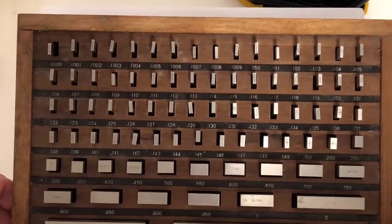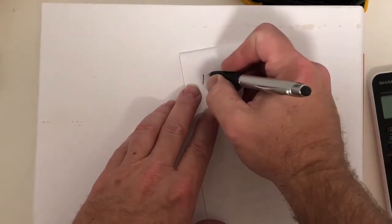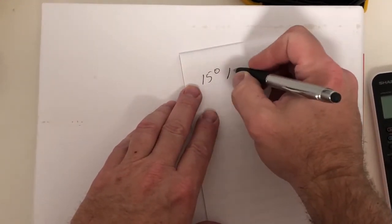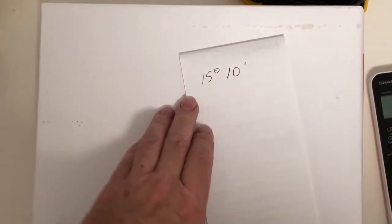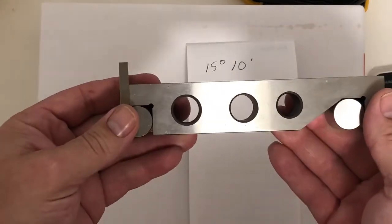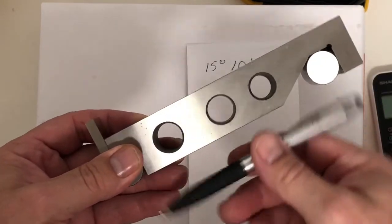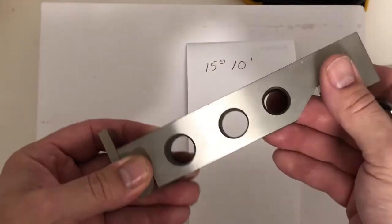We use gauge block buildup to calculate the heights. So let's come up with a number, shall we? Let's say 15 degrees, 10 minutes. If I want to set this five inch sine bar at 15 degrees in 10 minutes, how high would I need to build a gauge block setup?